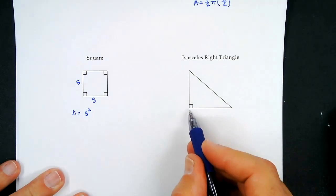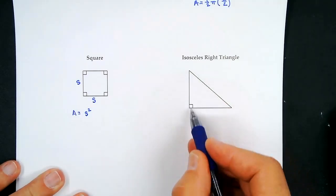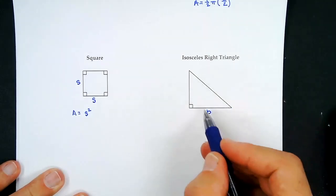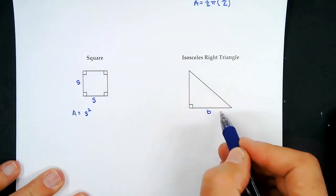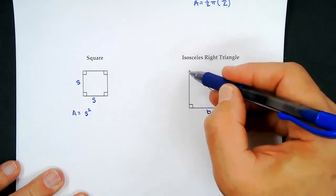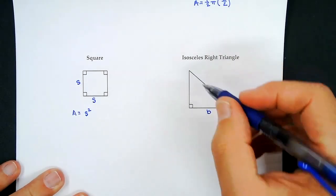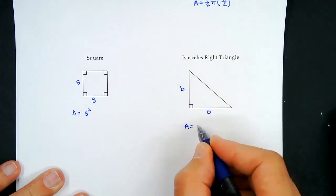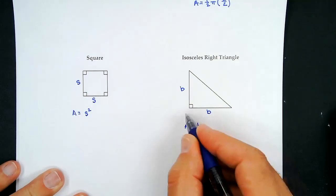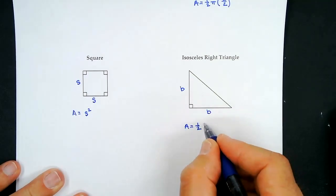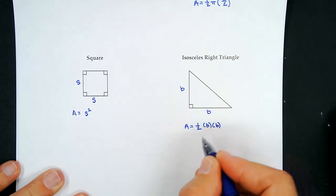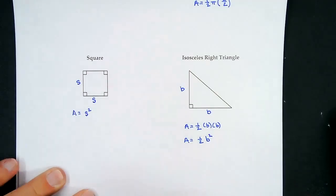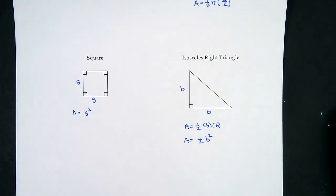For an isosceles right triangle: this is the base and this is the height. If it's an isosceles right triangle, the two legs are the same length, so the height equals the base. The area is one-half base times height, which becomes one-half b², or b² divided by 2.